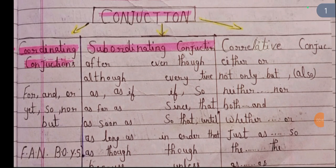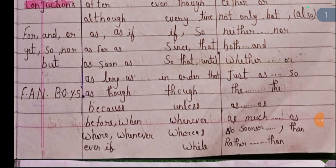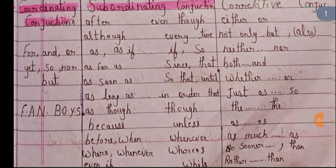Subordinating conjunctions include: since, that, so that, until, in order that, though, unless, whenever, while, etc.